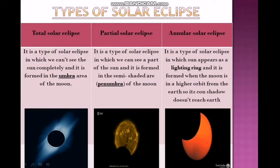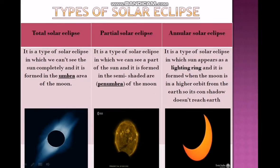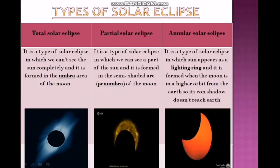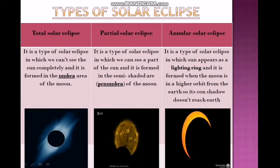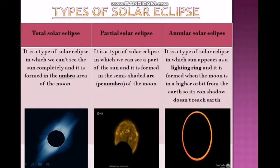The three types of solar eclipse: the Sun disappears completely in the total solar eclipse, part of the Sun disappears in the partial solar eclipse, and in the annular solar eclipse, the Sun appears as a lighted ring.